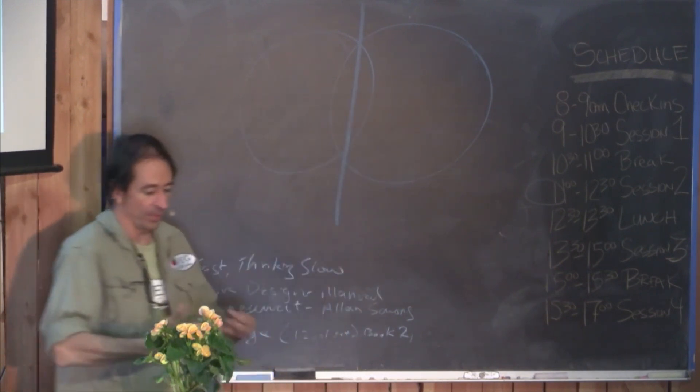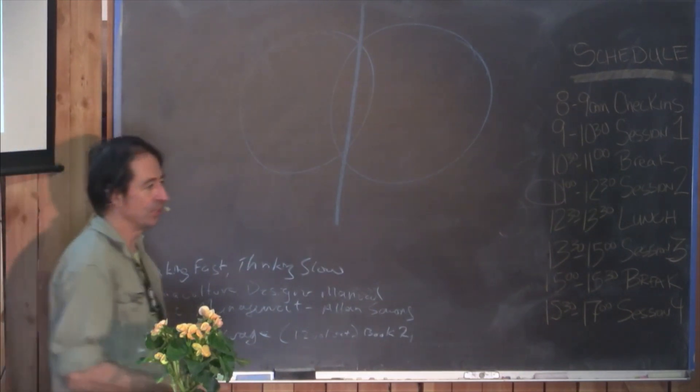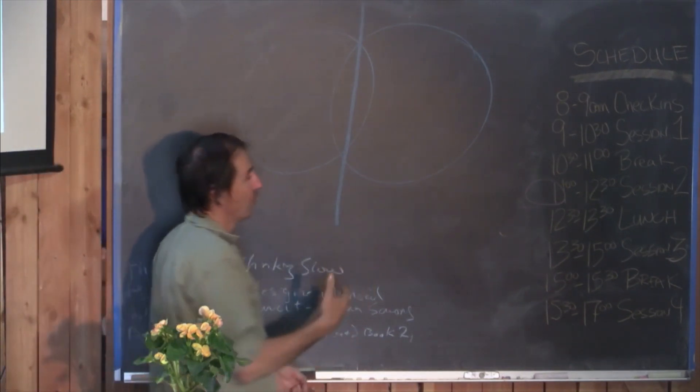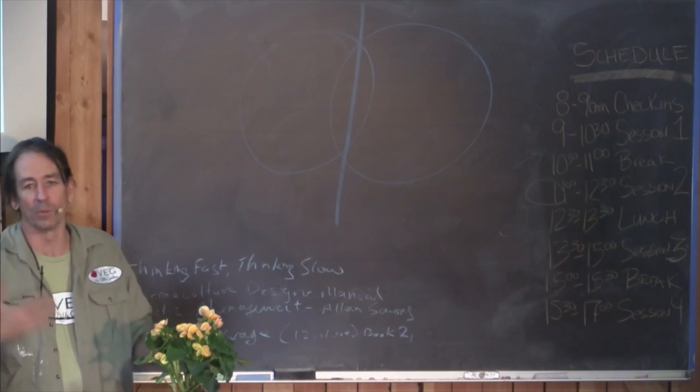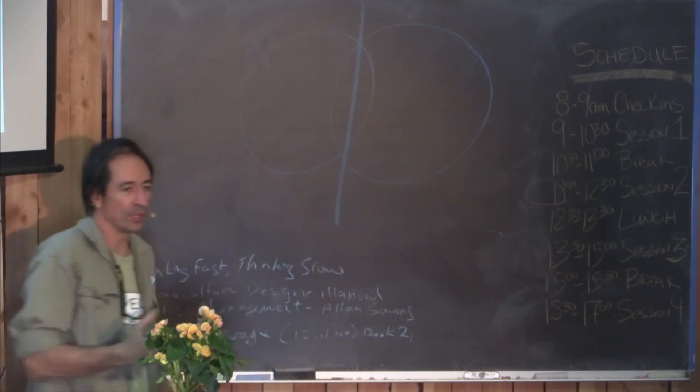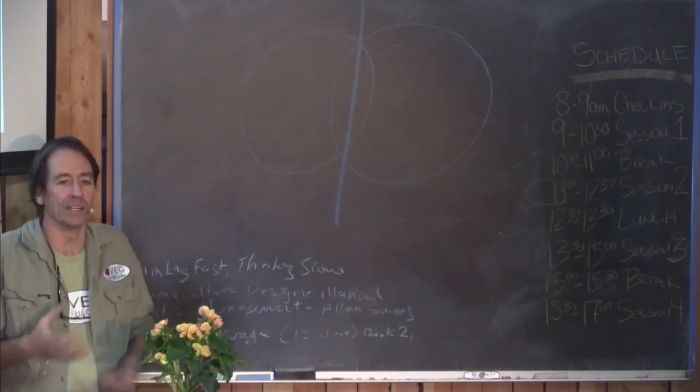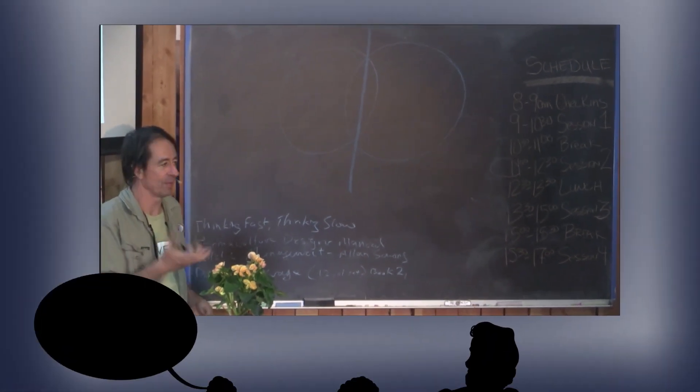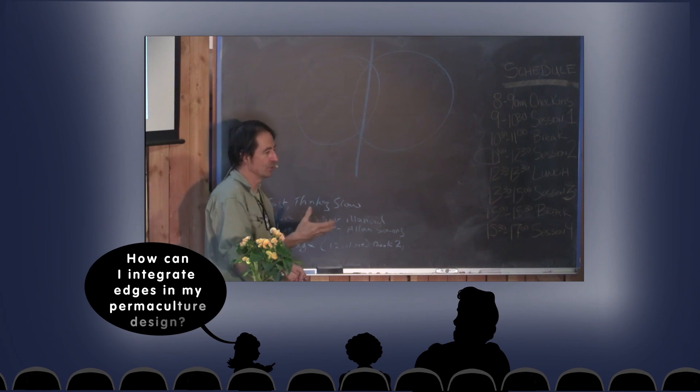So you have a double up, an overlap of the species, but then you'll also have a third group of plants, animals, or third community that actually lives there. So you get an intensification of complexity when you get into these areas of overlap or edge.